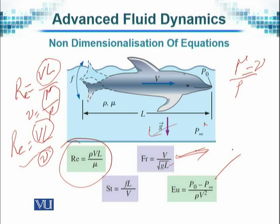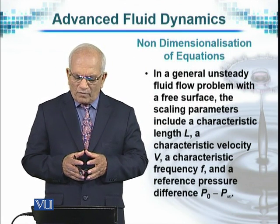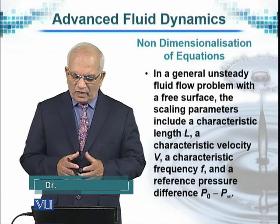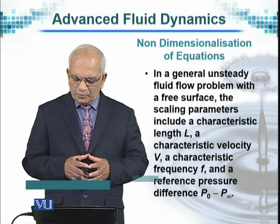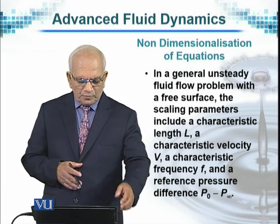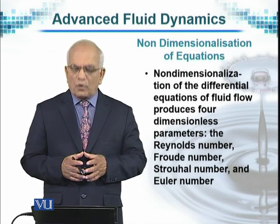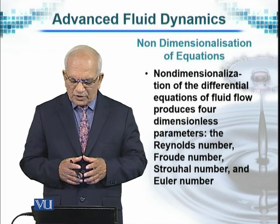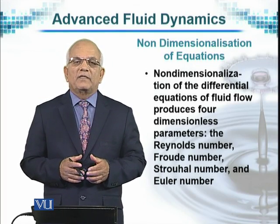Similarly, Euler's number is the ratio of pressure to velocity forces. In a general unsteady fluid flow problem with a free surface, the scaling parameters include a characteristic length L, characteristic velocity V, a characteristic frequency F, and a reference pressure difference P0 minus P-infinity. Non-dimensionalization of the differential equations of fluid flow produces four dimensionless parameters: the Reynolds number, the Froude number, the Strouhal number, and the Euler number.